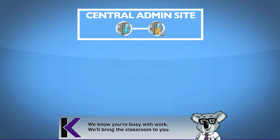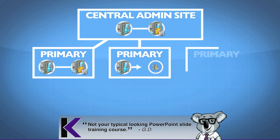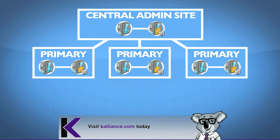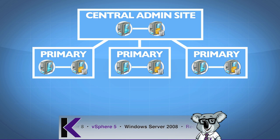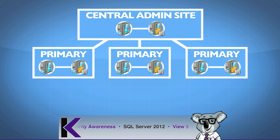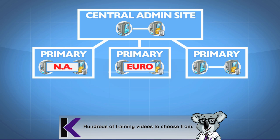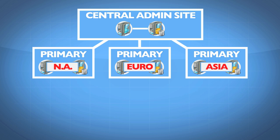Below the Central Administration Site we can have one level of primary sites — we're not going deeper than that with primaries. This is a big change from Config Manager 2007, where a primary site could be a child to another primary site. Now we're simply one level deep. Each primary site has its own site system and database and can support up to 100,000 client devices. In many cases these represent major regions like North America, Europe, Asia Pacific, and so on.